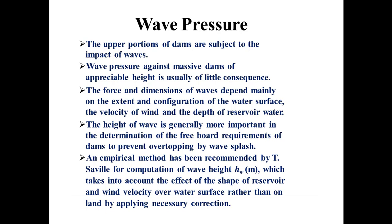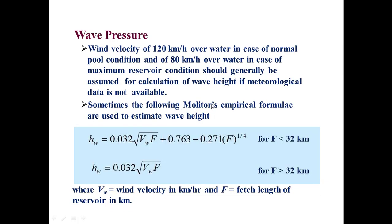An empirical method has been recommended by A.T. Saveli for computation of wave height, which is Hw in meters, which takes into account the effect of the shape of the reservoir and wind velocity over water surface rather than the land by applying necessary corrections. The wind velocity of 120 km per hour over water in the case of normal pool conditions,